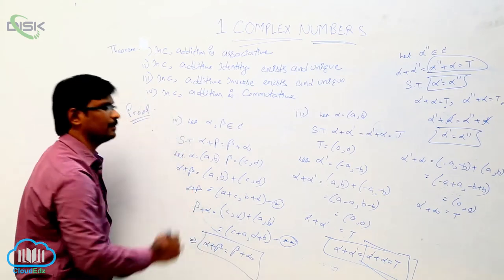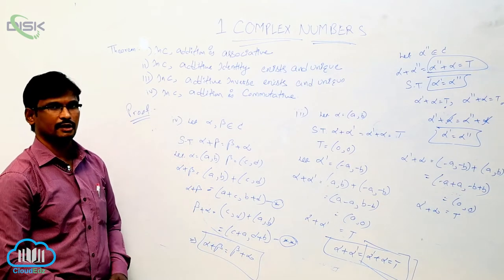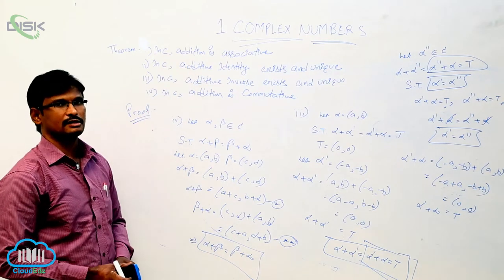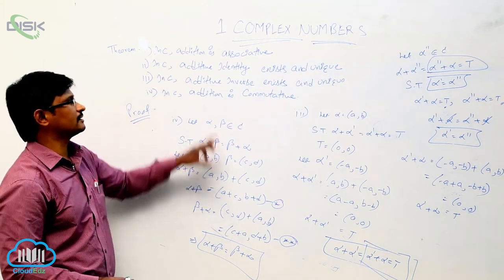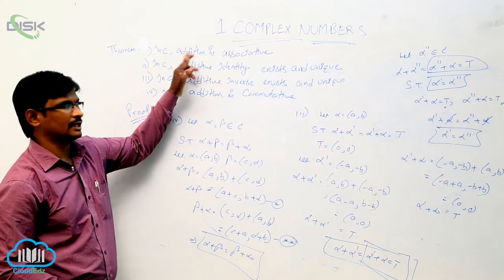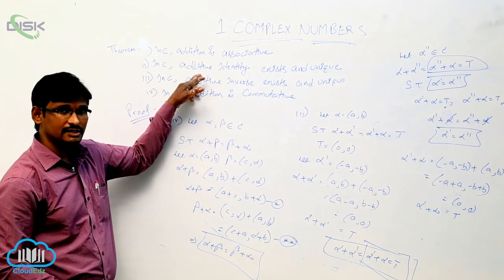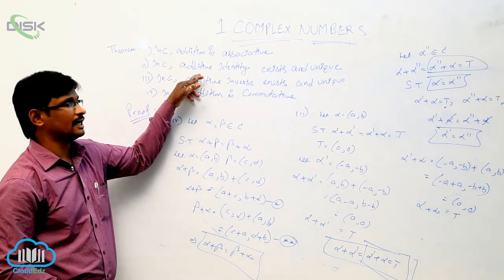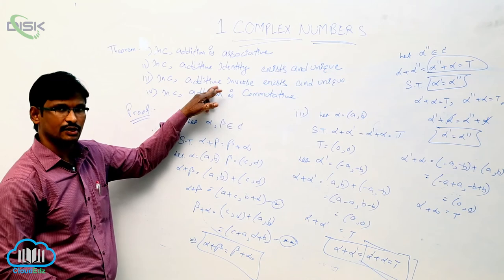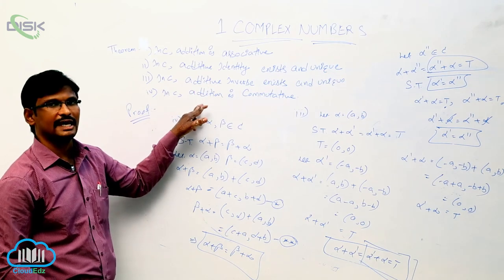In complex numbers, addition satisfies the associative property, identity exists and is unique, additive inverse exists and is unique, and the commutative property is satisfied.